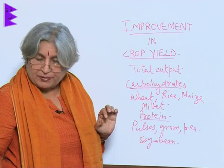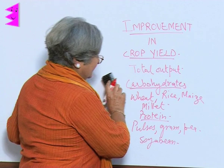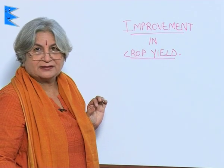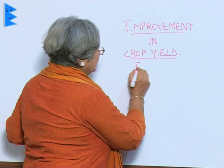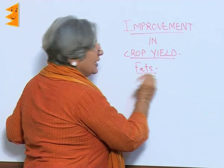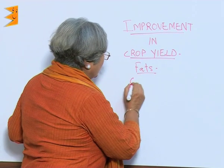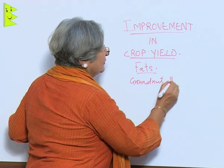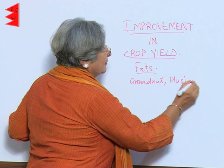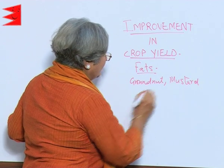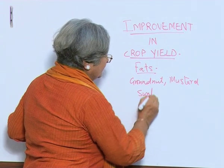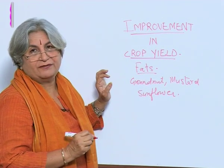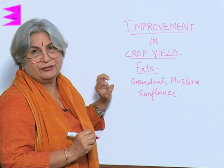Then what about oils? How do we get fats? From oils, and for oil we grow groundnut, mustard, and sunflower. These are the crops that we grow for these kinds of nutrients.